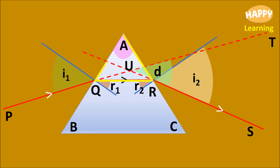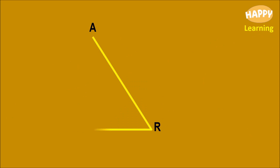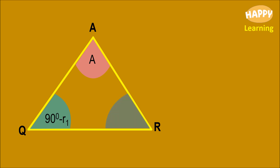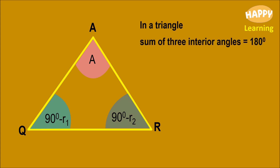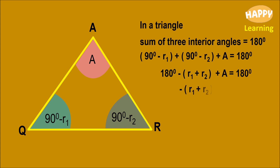Now observe triangle ARQ and its interior angles. Let us have a close and clear look at triangle ARQ. The angle at A is A. The angle at Q is 90 minus R1. The angle at R is 90 minus R2. In a triangle, the sum of three interior angles equals 180 degrees. So (90 minus R1) plus (90 minus R2) plus A equals 180 degrees. On simplification, we get A equal to R1 plus R2. Let this be equation number 2.